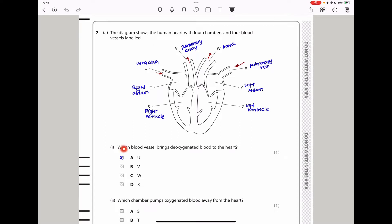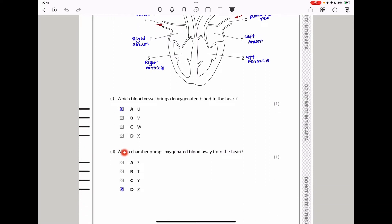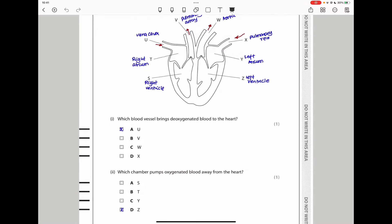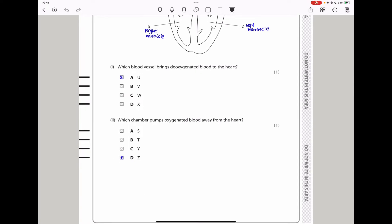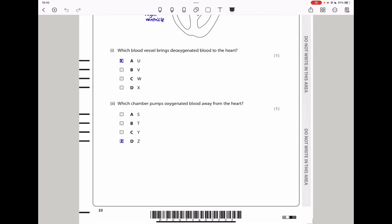The first question says which blood vessel brings deoxygenated blood to the heart. It means this blood is coming from the rest of the body, so it should be the vena cava, and the answer should be A, because it's blood vessel U. Next they say which chamber pumps oxygenated blood away from the heart. The chamber that pumps should be this one here, the left ventricle. This is the one that is more muscular than the right ventricle.